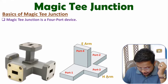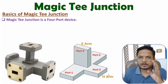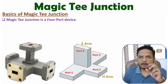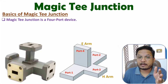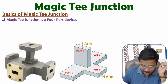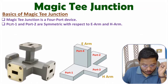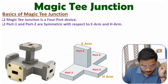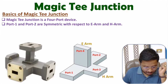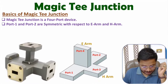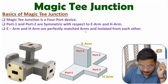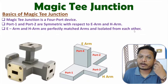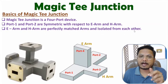The E-arm and H-arm are perfectly matched arms, meaning the return loss at port 4 and port 3 is zero — if you give input at those ports, reflection will be zero. Port 1 and port 2 are symmetric with respect to both E-arm and H-arm. The E-arm and H-arm are isolated from each other: input at E-arm gives zero output at H-arm, and vice versa.